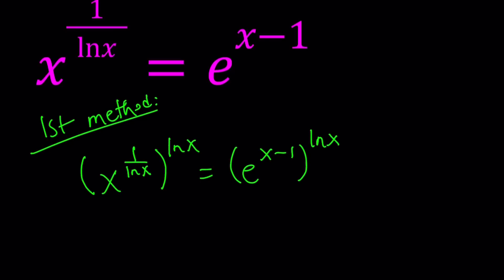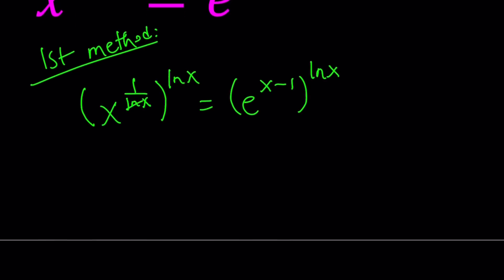Now when you multiply the exponents, ln x cancels out, leaving us with x to the first power, which is the same thing as x. And on the right hand side we get something more complicated. But don't worry, we're going to distribute it and simplify it.